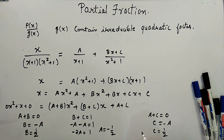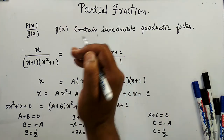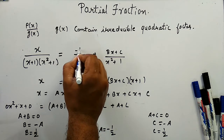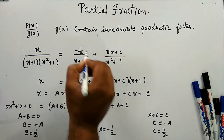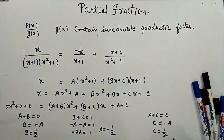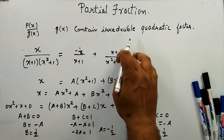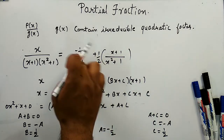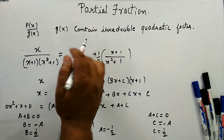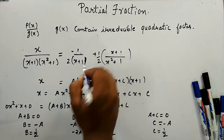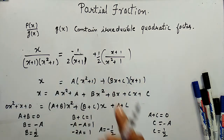Putting these values in, the partial fraction is (-1/2)/(x + 1) + (x/2 + 1/2)/(x² + 1). Rearranging, this becomes -1/2·(x + 1) form. So this is the partial fraction form of the second example.